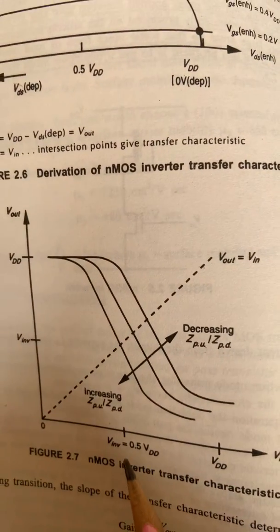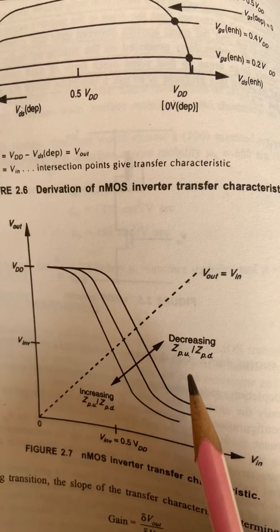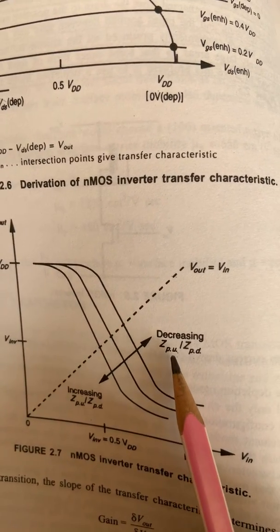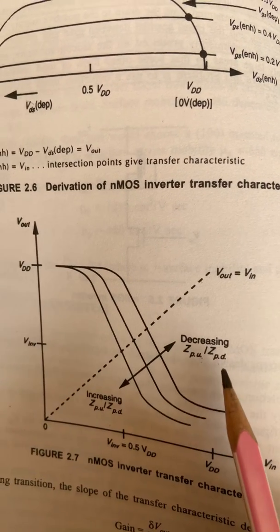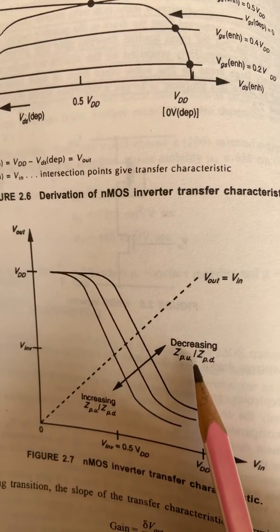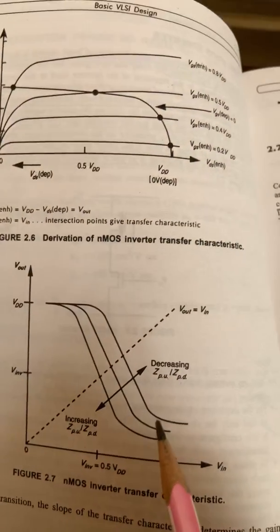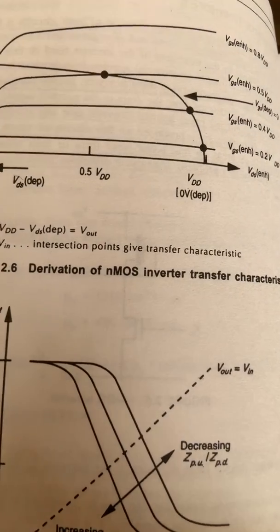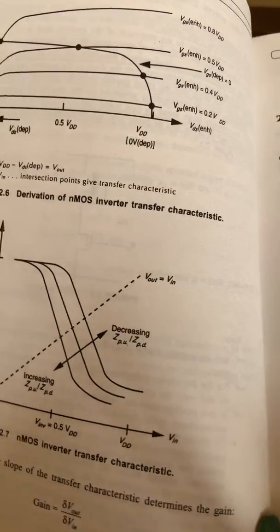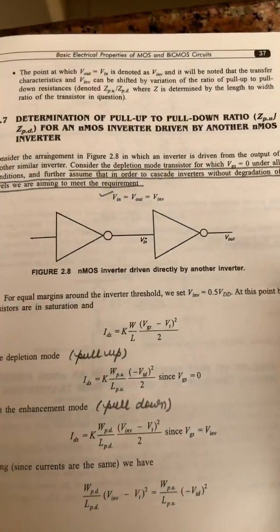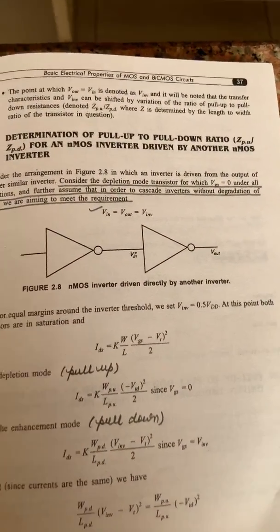VINF can be shifted by the variation of the pull-up to pull-down resistances, where ZPU stands for pull-up resistance and ZPD stands for pull-down resistance. Z is the ratio of the length to width of the transistor. Next we have the topic of determination of pull-up to pull-down ratio for an NMOS inverter.